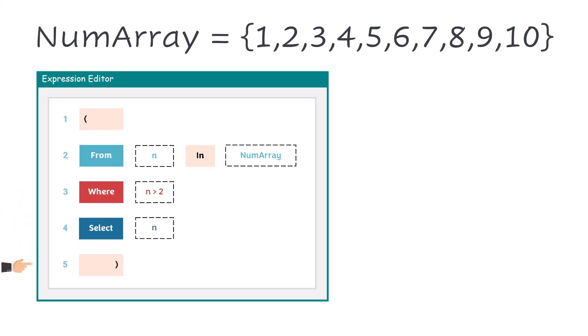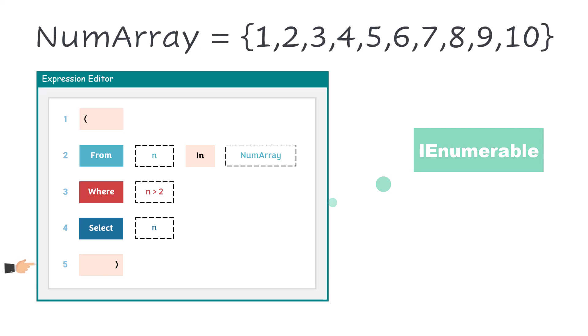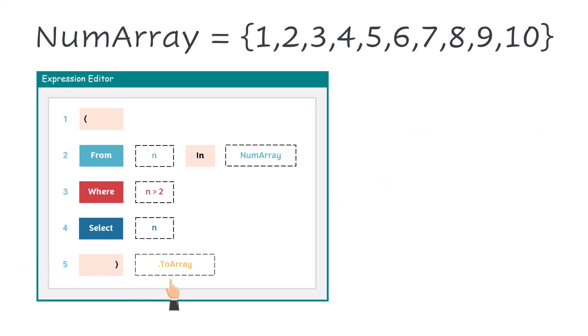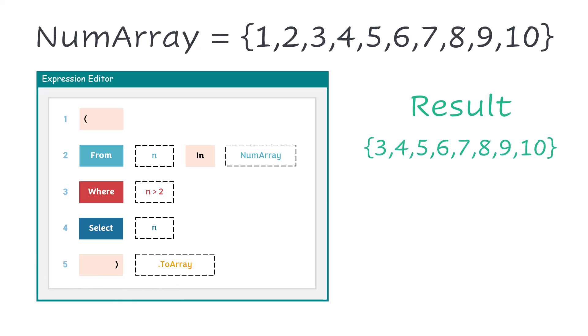Until this point the output is of type IEnumerable. Assume I want to get the output as an array. In this case I will add the ToArray function to get the output as array. The result of this query is as follows — we have 8 numbers which are greater than 2.